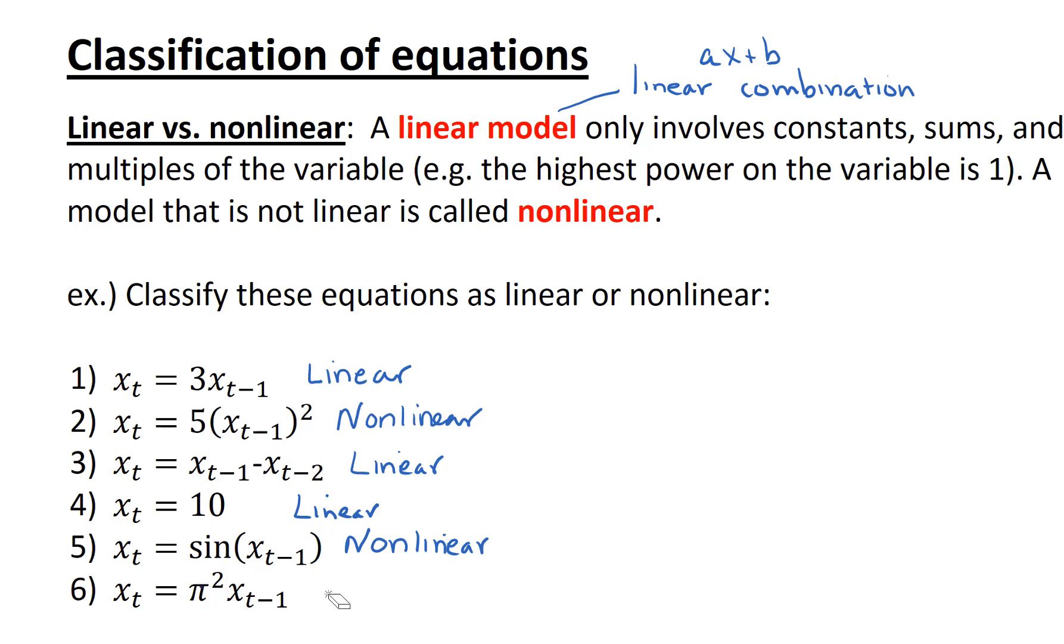For our sixth example, we've got x sub t equals pi squared times x sub t minus 1. This, again, is a linear model. Now, I know that we've got pi squared, but I don't care. That's just our coefficient. Our variable has exponent 1, and that's what we care about.